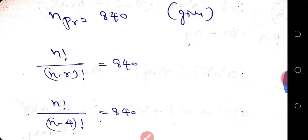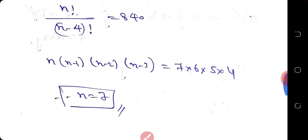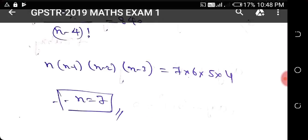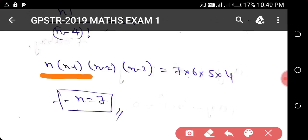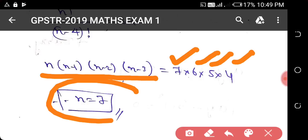NPR is equal to 840. Substituting R = 4: n factorial by (n minus 4) factorial equals 4 times n into (n-1) into (n-2) into (n-3), giving 7 × 6 × 5 × 4. Therefore n is equal to 7. So that is the answer.